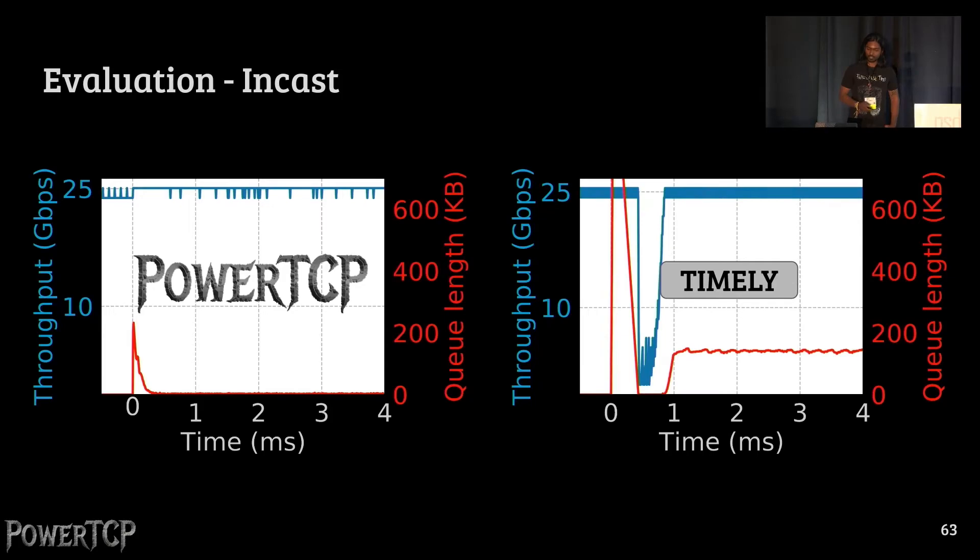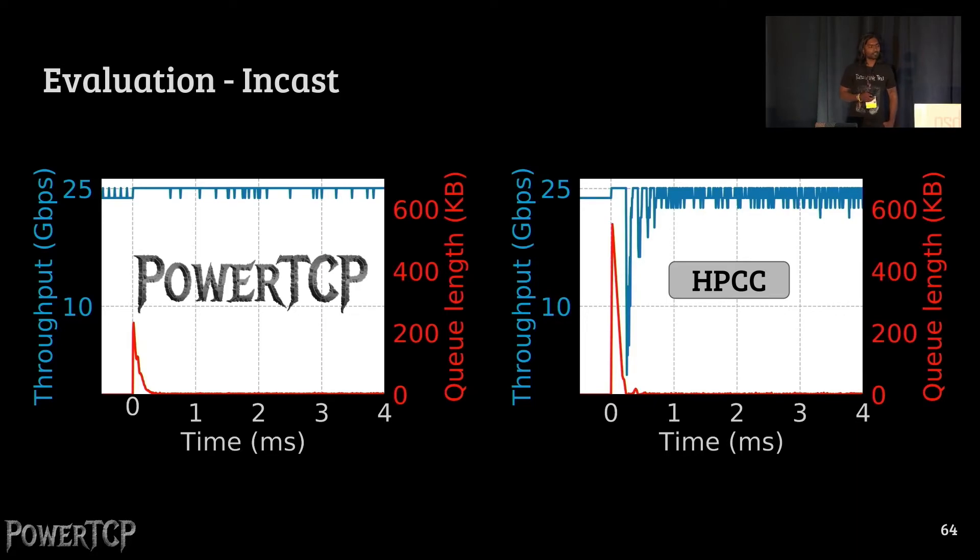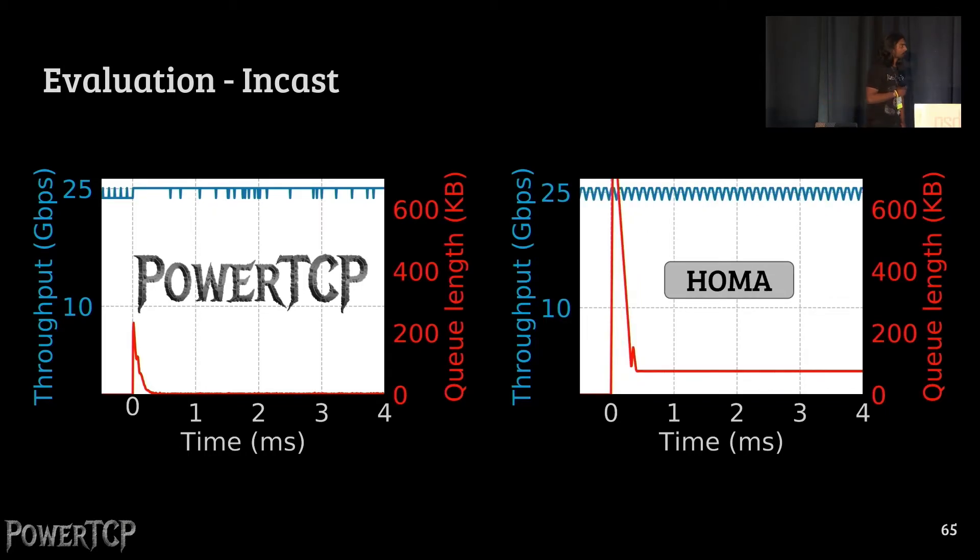In contrast, timely incurs significantly higher queue length, along with a massive drop in throughput after reacting to congestion. Note that timely here is an RTT gradient-based approach. HPCC slightly improves upon timely, but still far from PowerTCP in terms of reacting to congestion, as well as maintaining throughput. HOMA, interestingly, does not lose throughput, but significantly higher queue length compared to PowerTCP.